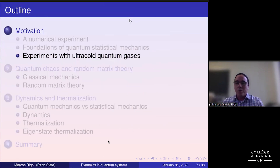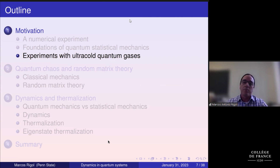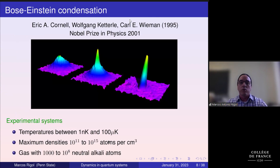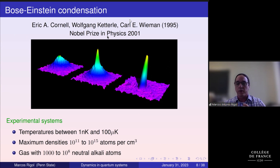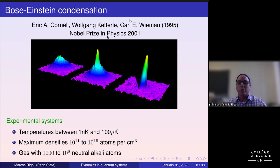One may ask why people are so interested in this now, as opposed to Neumann's time. One of the main reasons is experiments. Now we have experiments that can probe dynamics of nearly isolated systems — mostly cold-atom experiments. This started with the big achievement in 1995, for which experimentalists got the Nobel Prize in 2001: achieving Bose-Einstein condensation. They can trap atoms in a conservative potential and cool them to extremely low temperatures, ranging from one nanokelvin to 100 microkelvin.